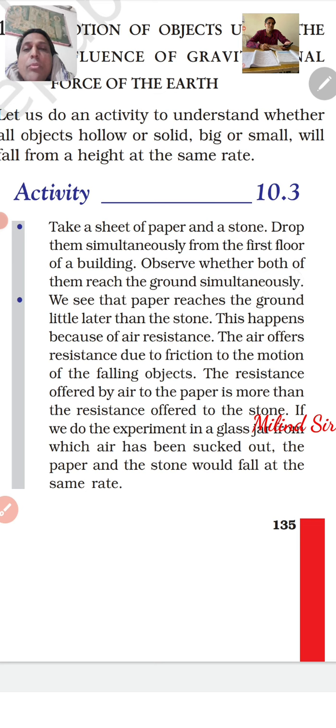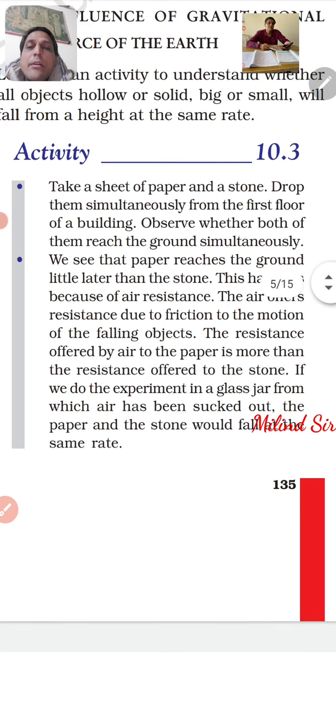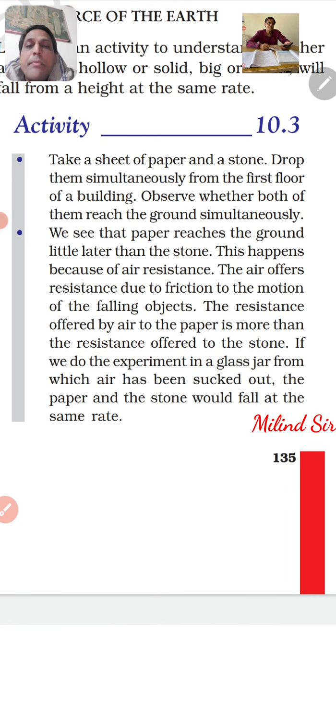They will fall from the first floor of the building. Observe whether both of them reach the ground simultaneously. We see that paper reaches the ground a little later than the stone. This happens because of air resistance.